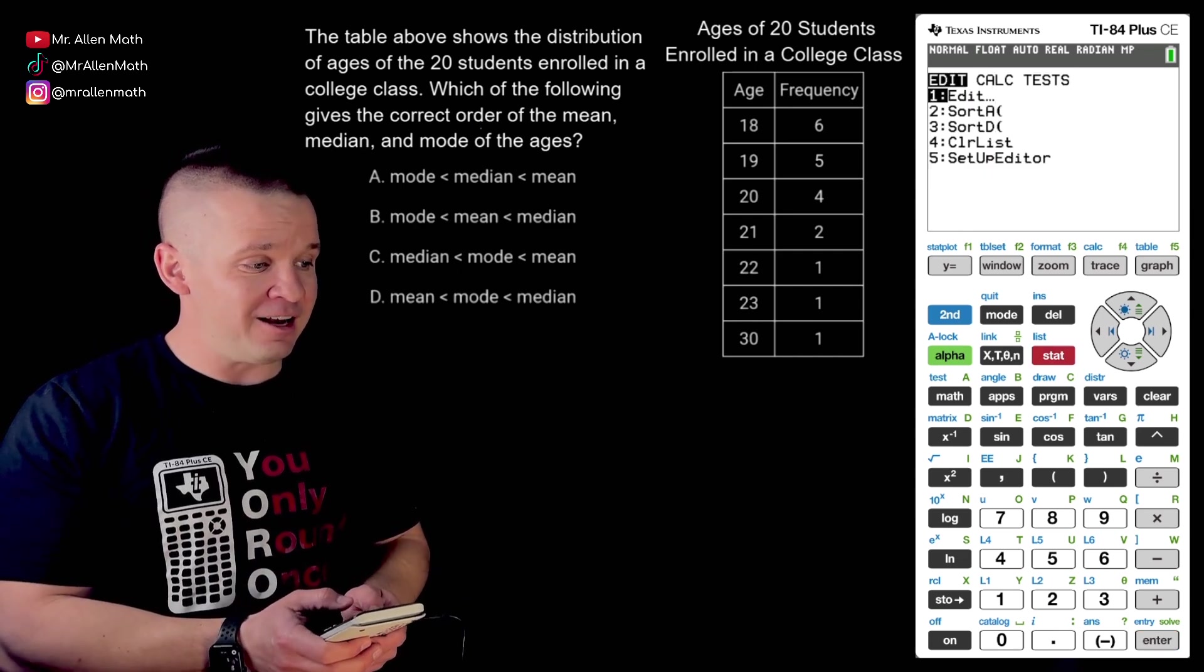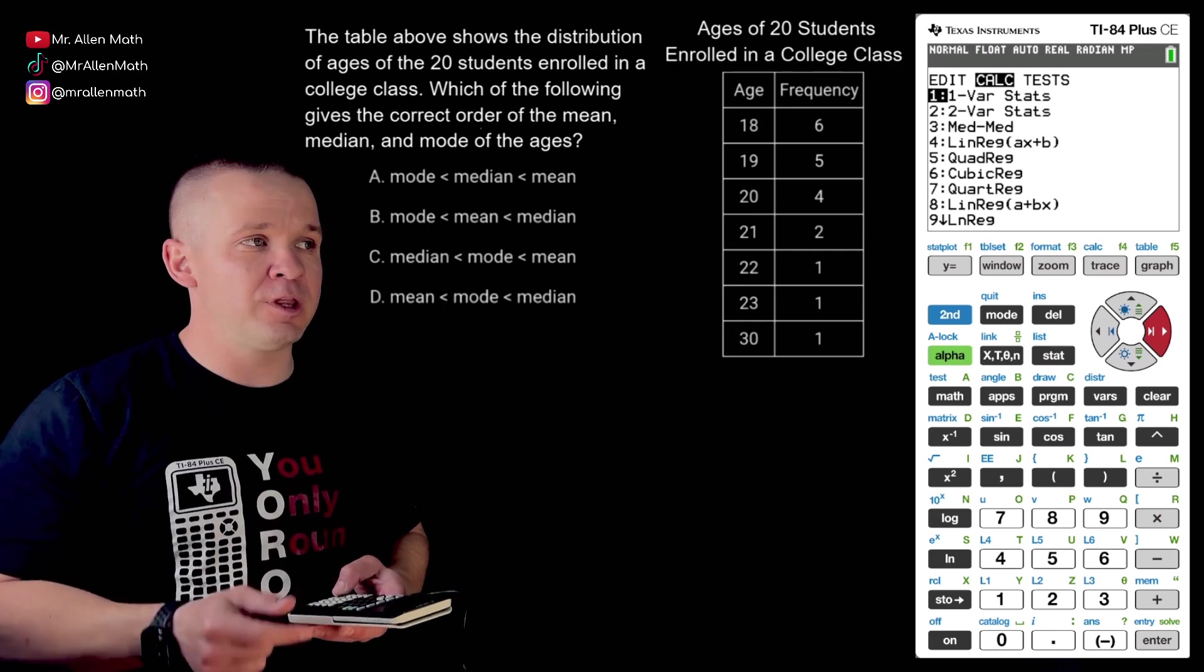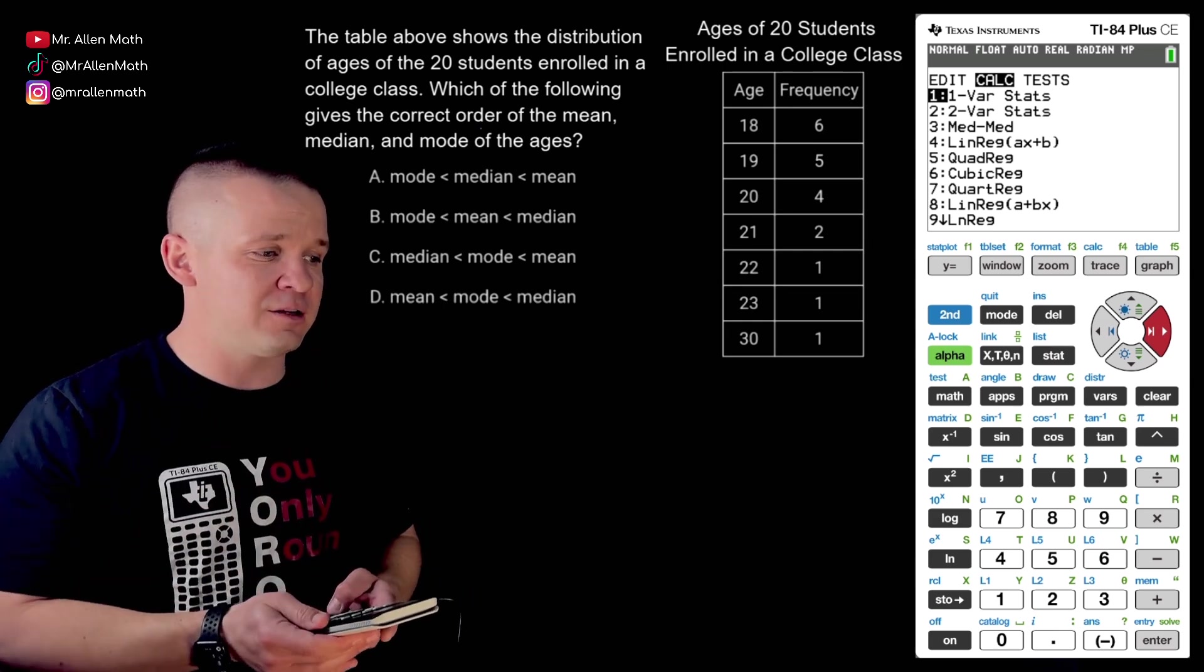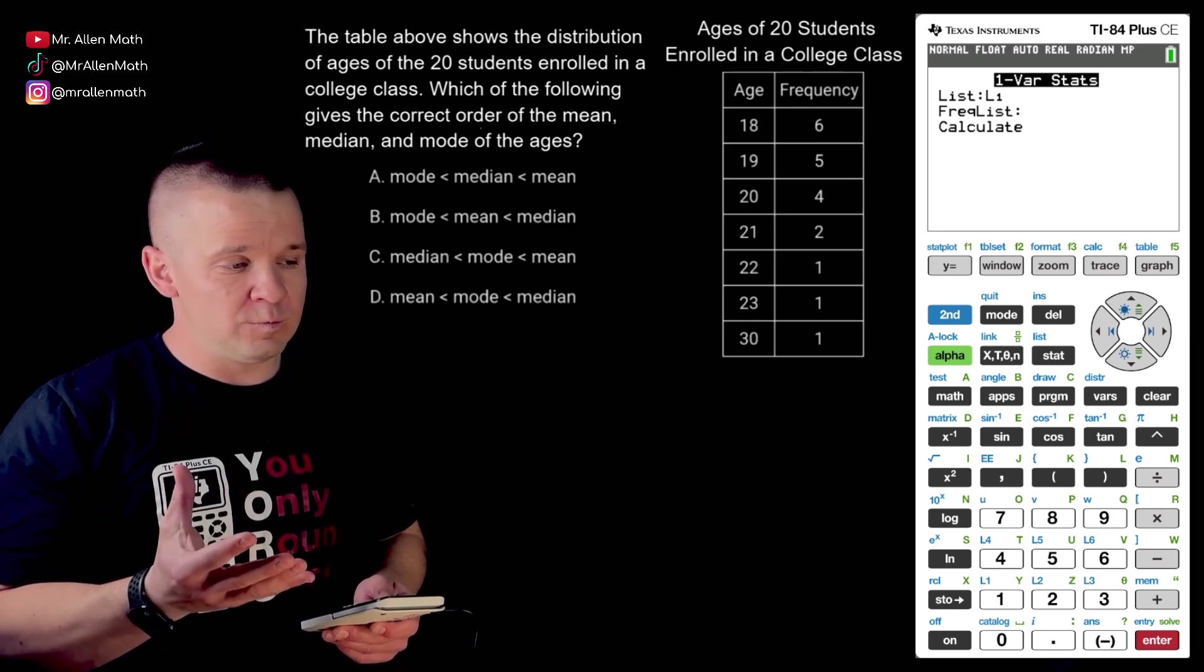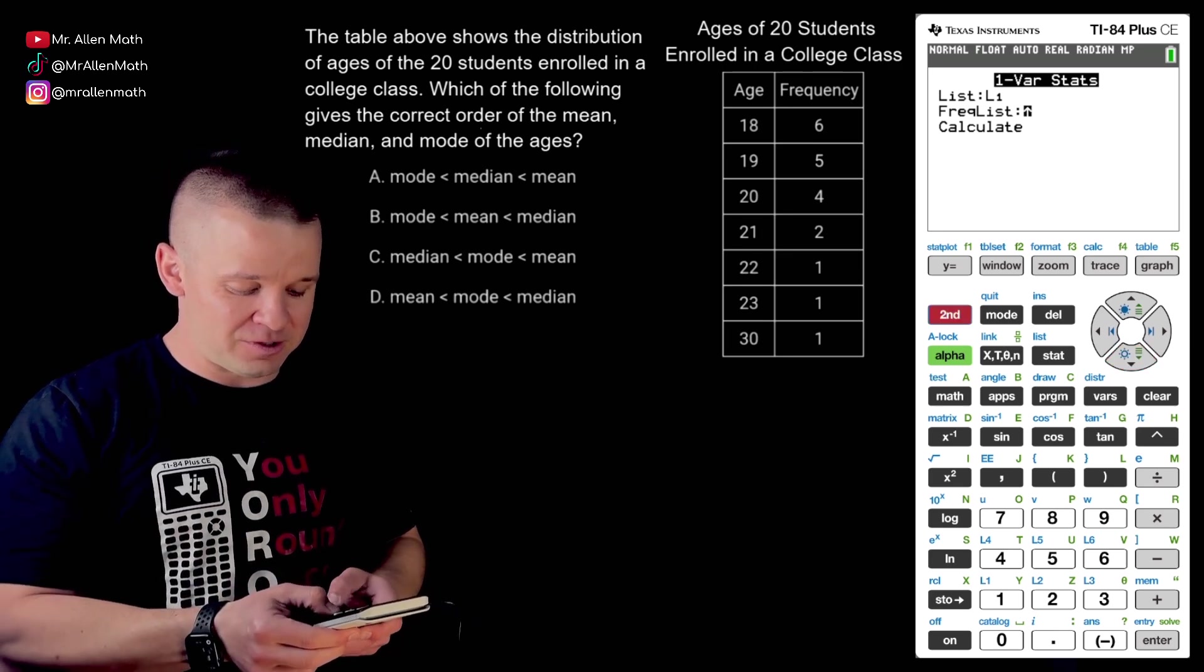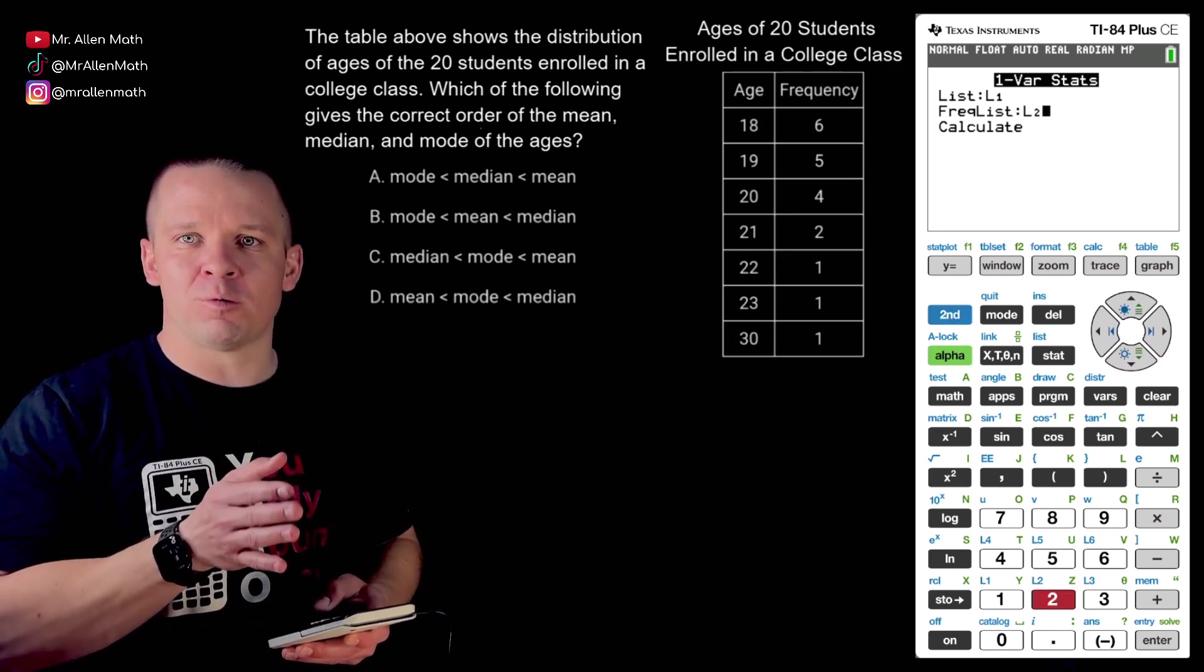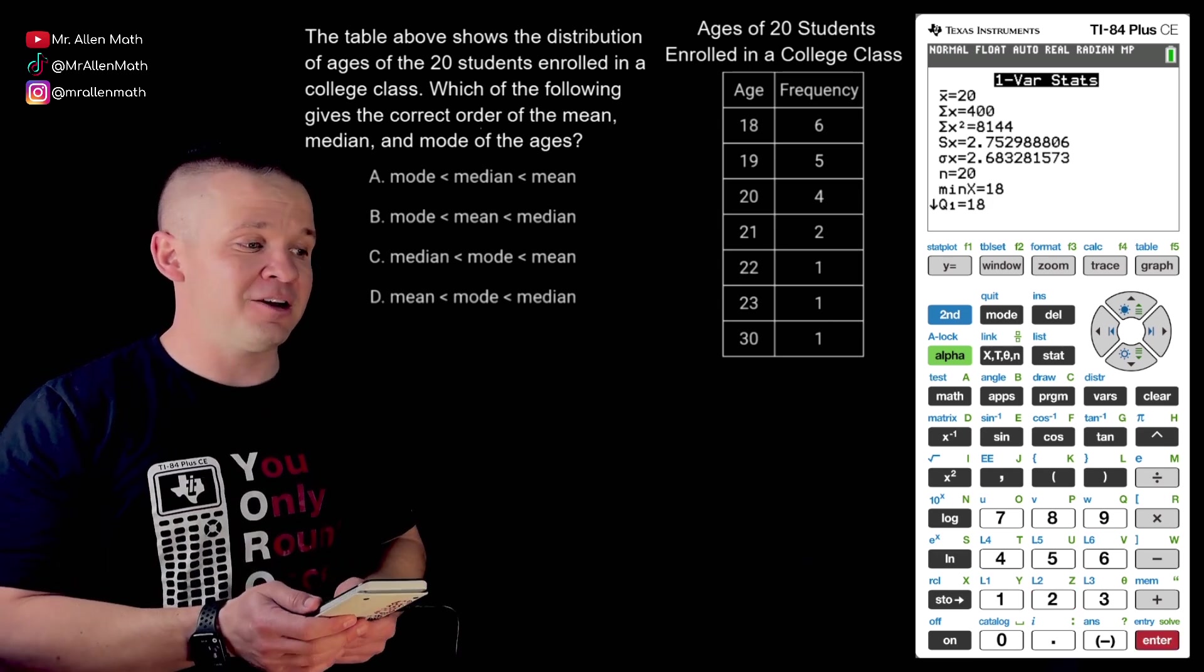We're going to hit stat again, go to calc, and you have one variable statistics. That's the one that we want for this. That'll get you your mean, median, mode, all sorts of stuff - quartiles, all that good stuff. Hit enter on that. Our list one is good, that's our list. But our frequency list, that's L2. So hit second two. And now it'll put the six, five, four, two, one, one, one - those are going to be your frequencies. Now hit enter. Hit enter on calculate and check it out.